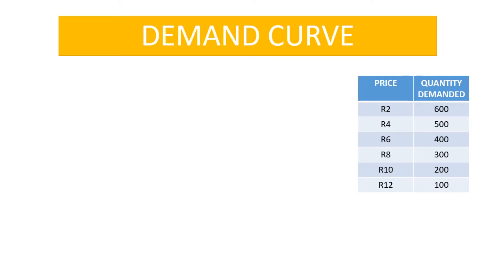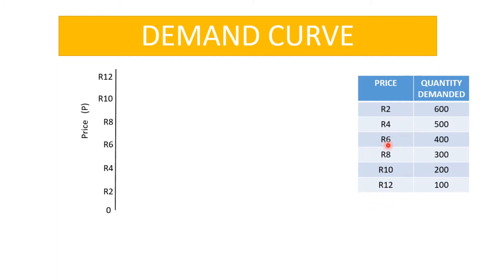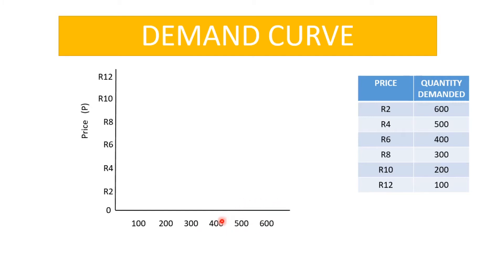We are going to use this demand schedule for drinks. We start with the vertical axis, which we label 'Price,' and number it according to the prices given. Then we draw the horizontal axis numbered from 100 to 600, showing the quantity demanded. Always remember: quantity is recorded on the horizontal axis, price on the vertical axis. We label it 'Quantity Demanded' and our title is 'Demand Curve for Drinks.'